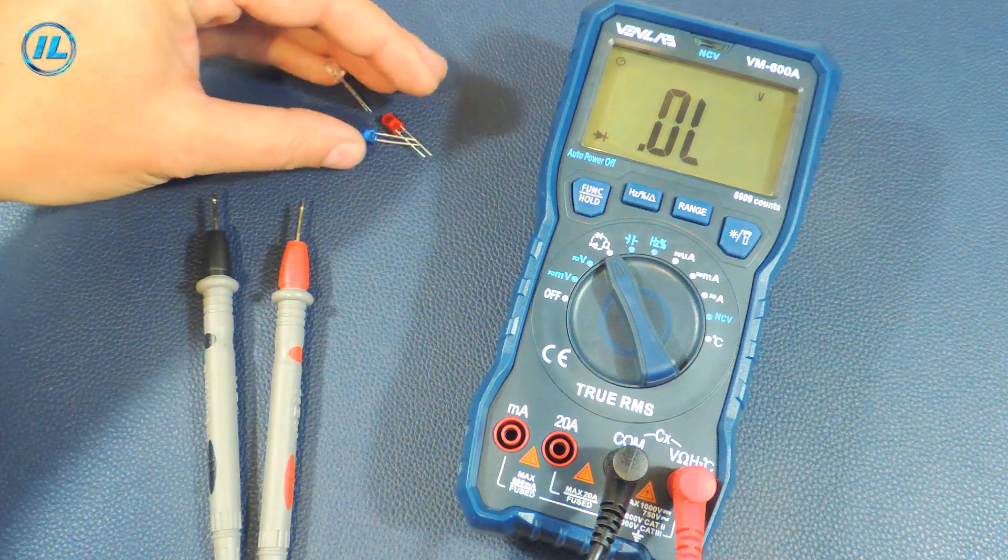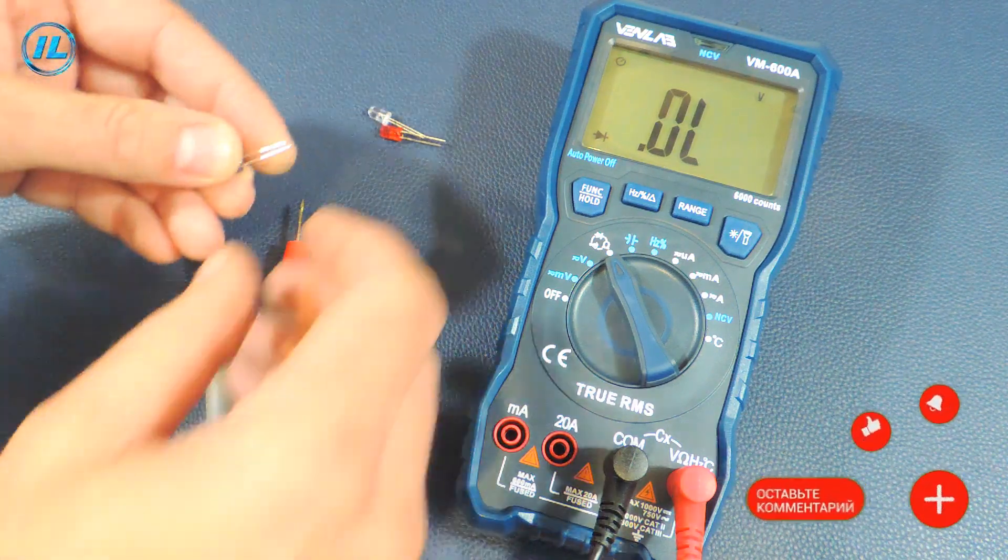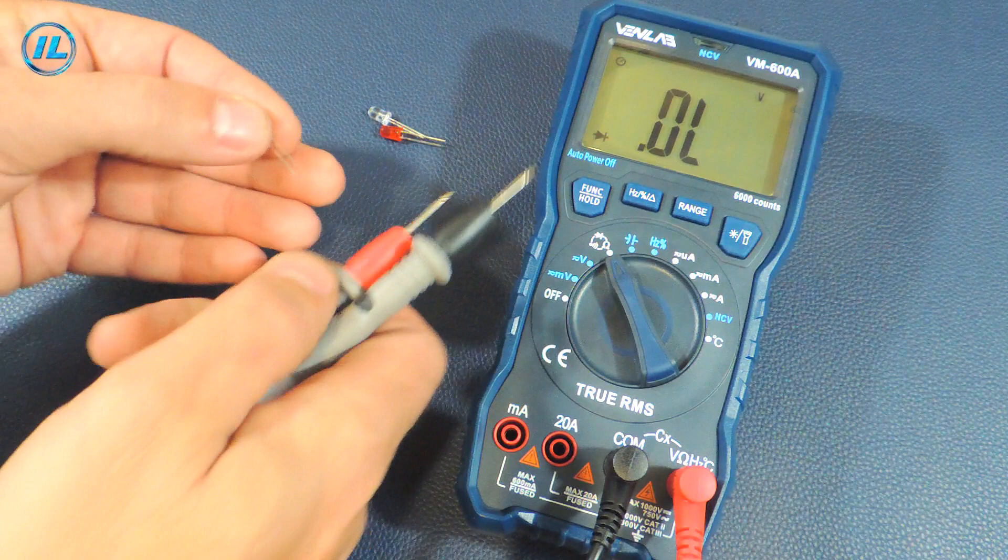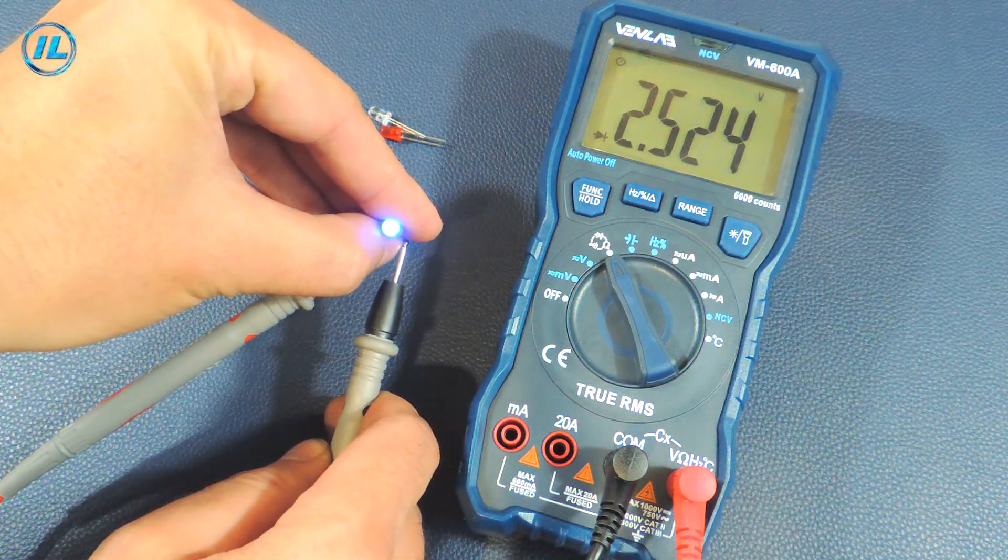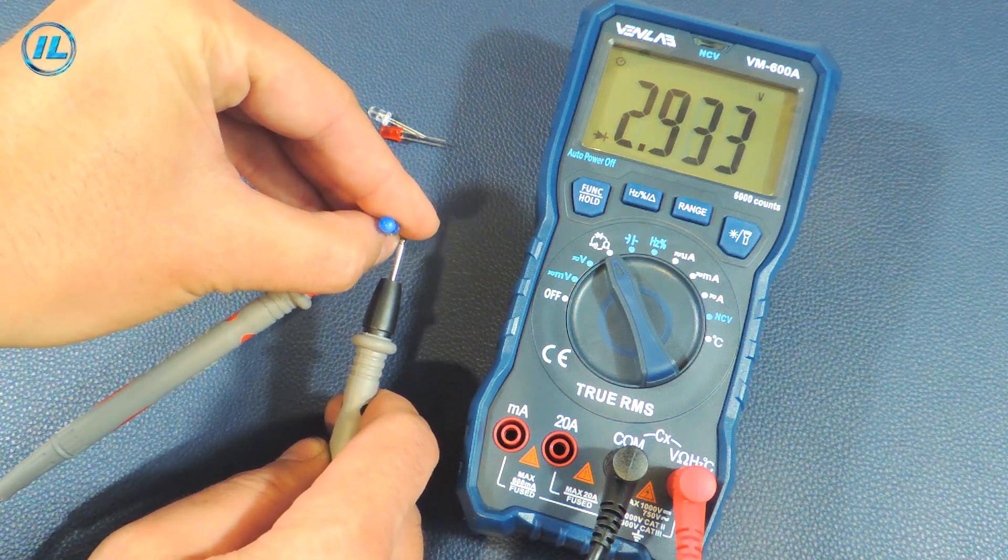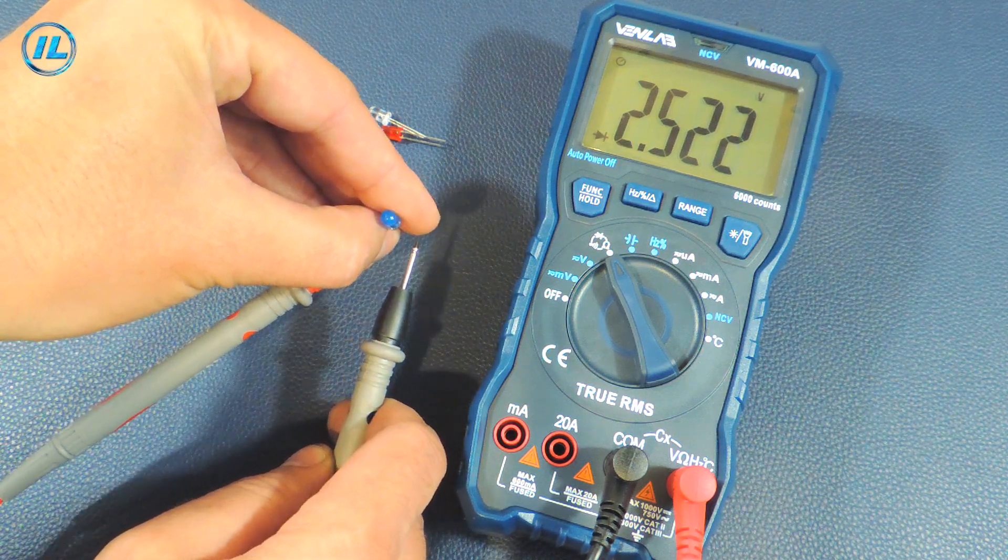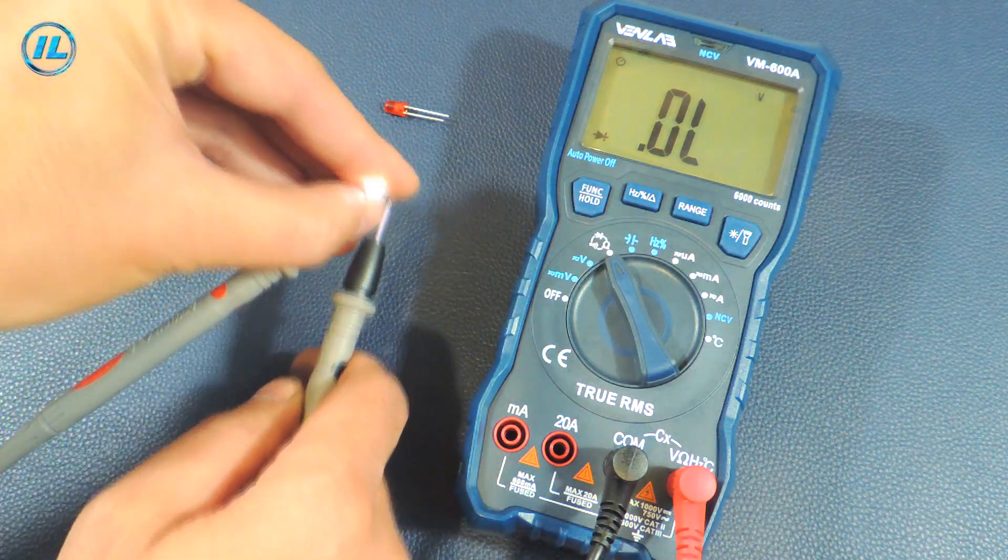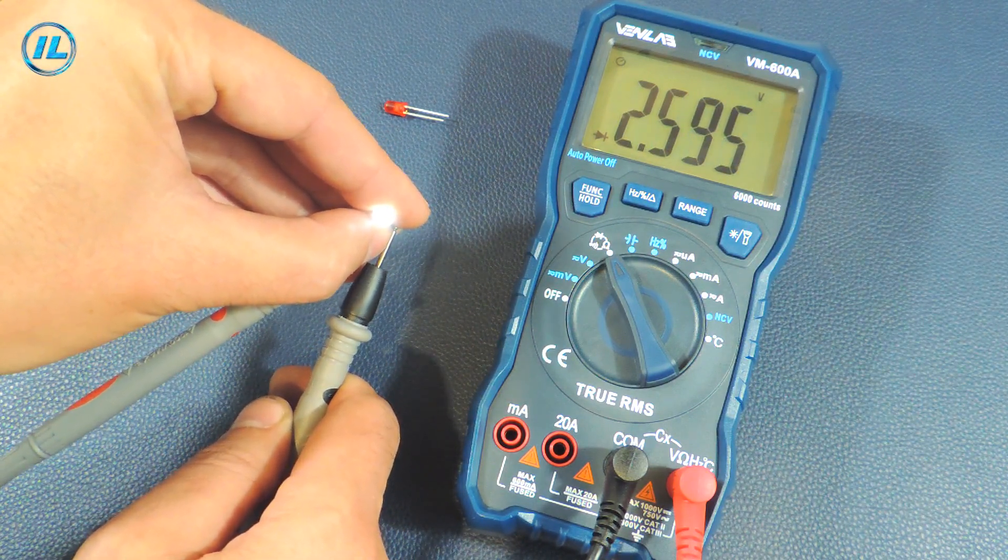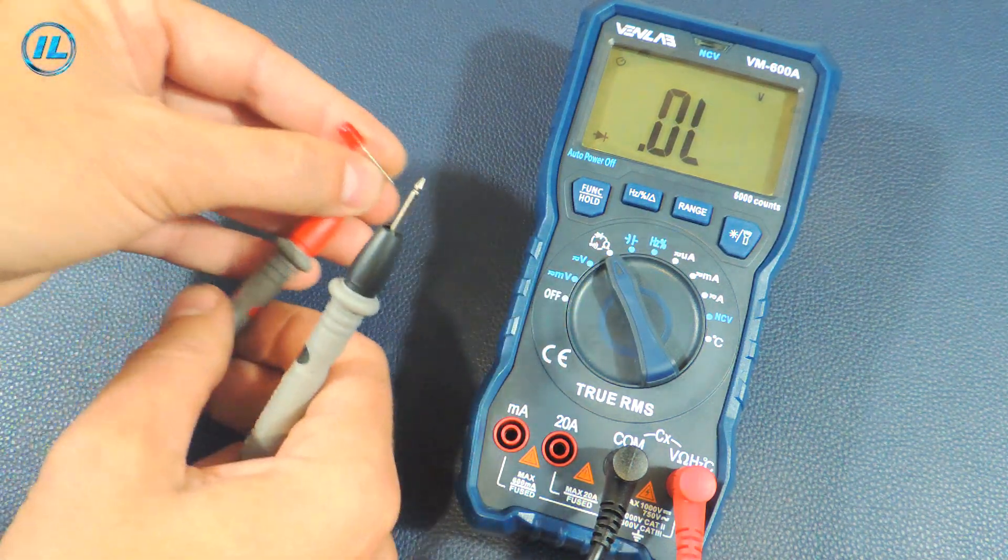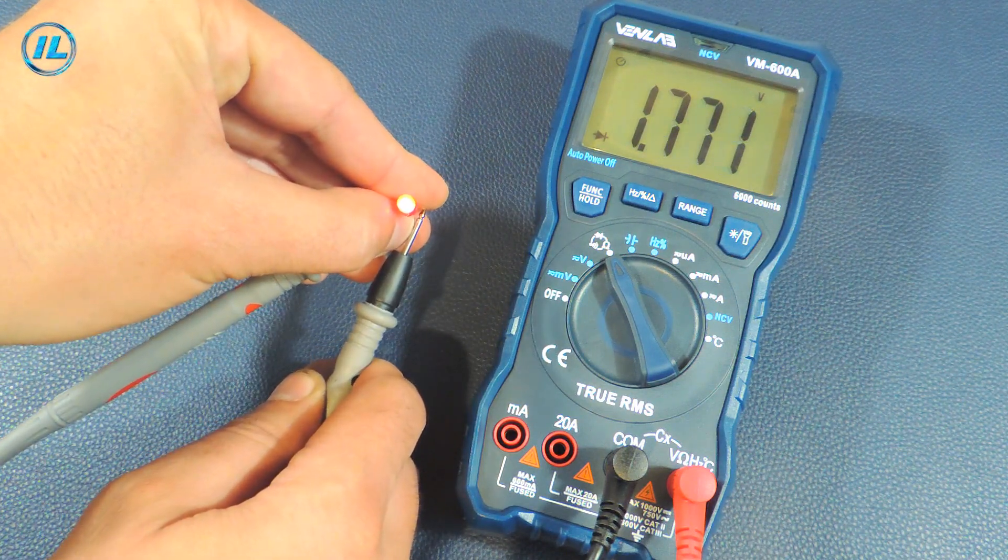I want to see if this multimeter can check the LEDs, that is if it can light them. Blue LED. As you can see, everything is fine. The multimeter shows a voltage drop of 2.5 volts on this LED. White LED and 2.6 volt voltage drop. The red LED has a smaller voltage drop, 1.77 volts.